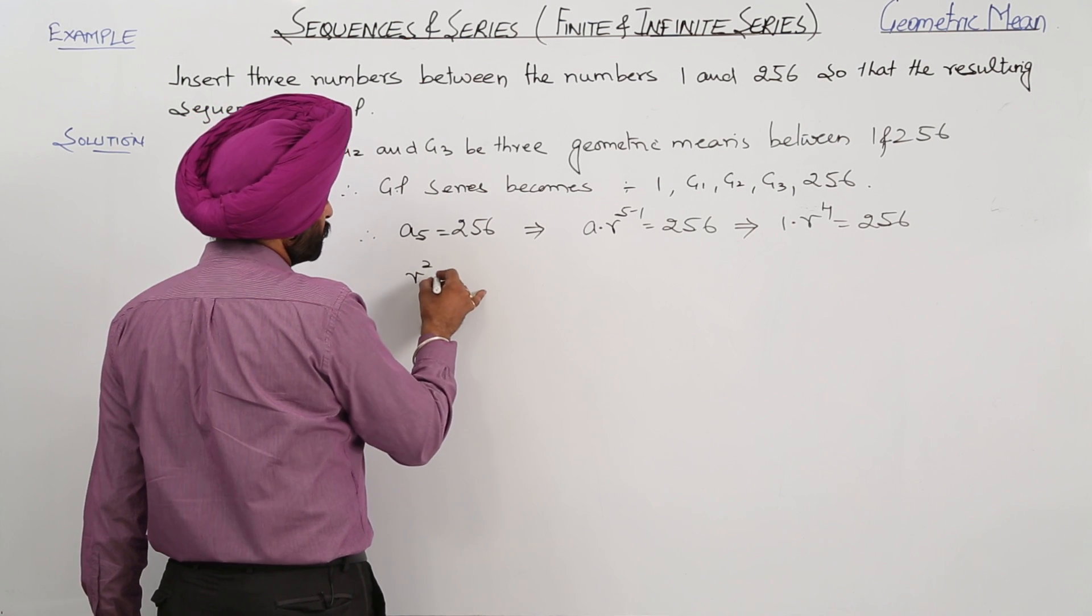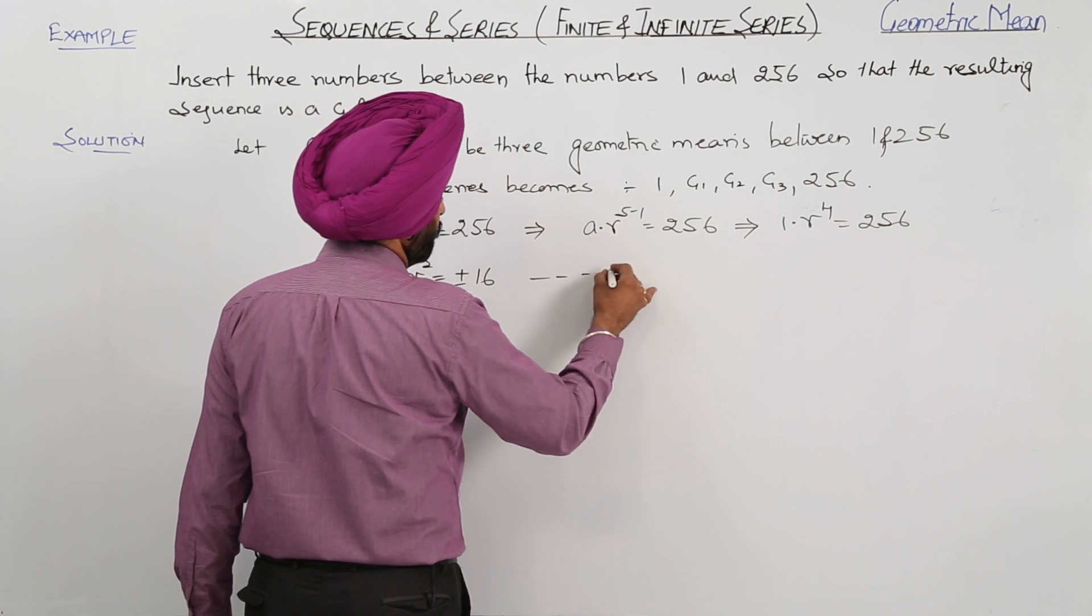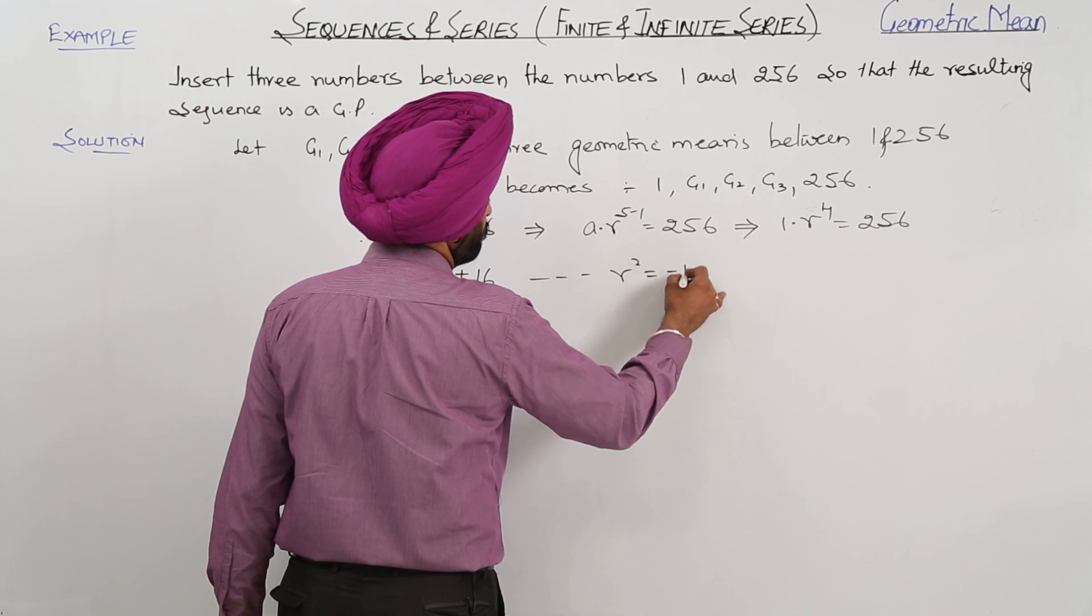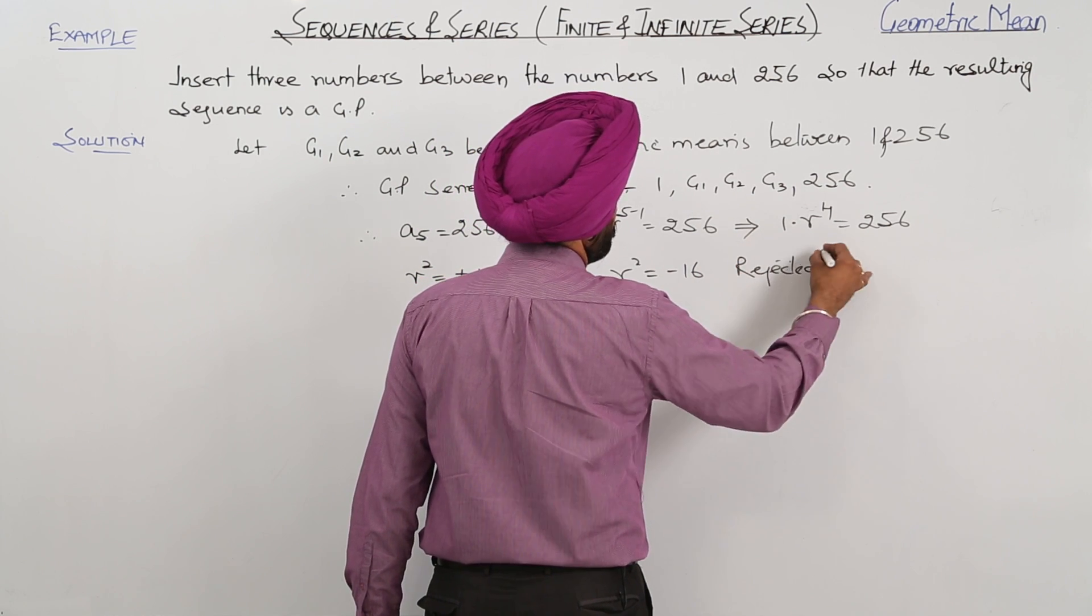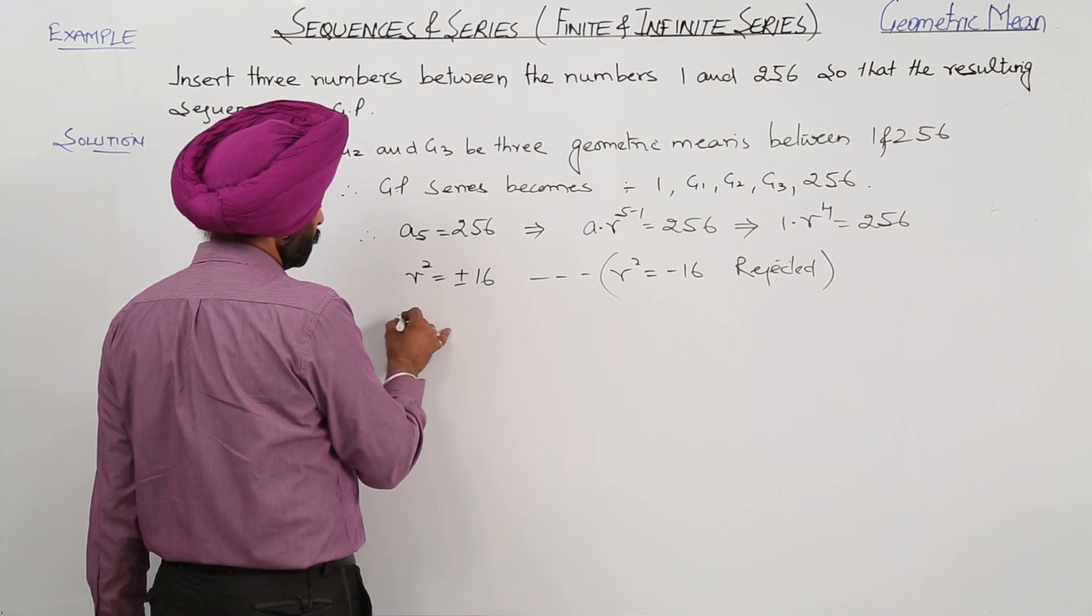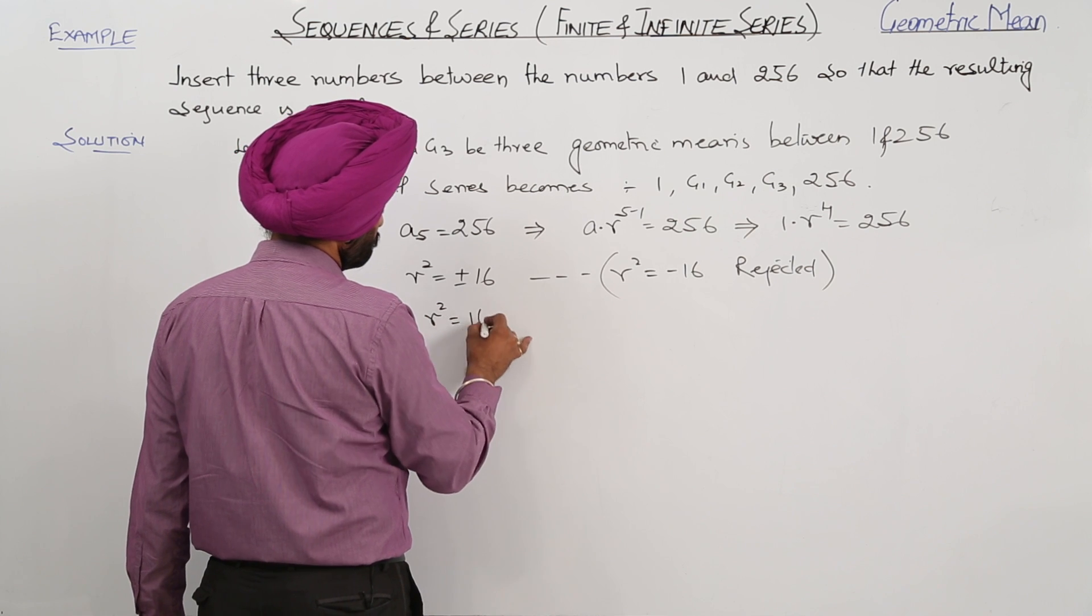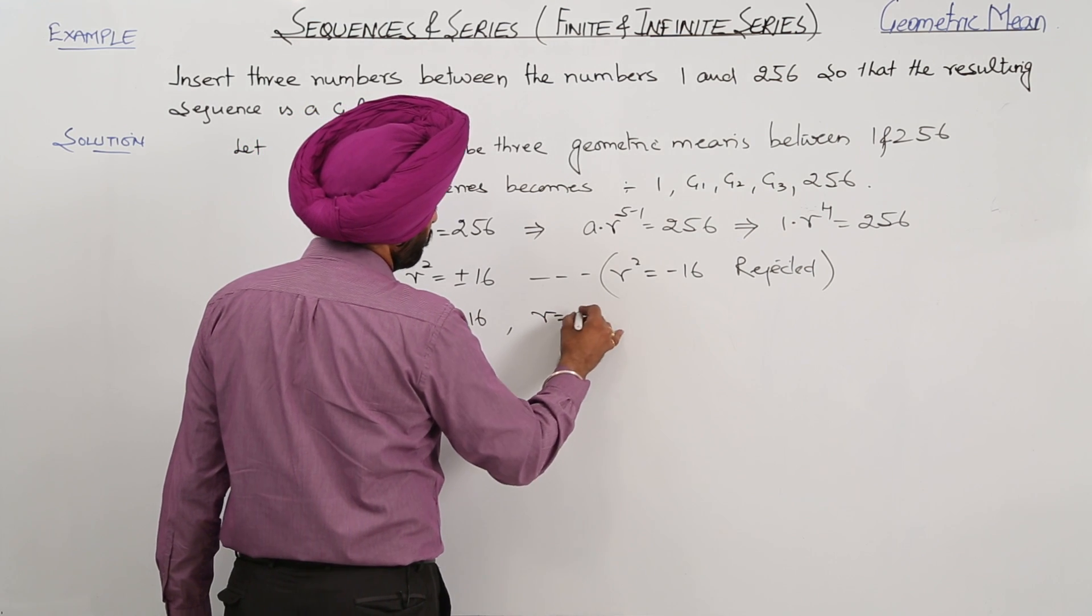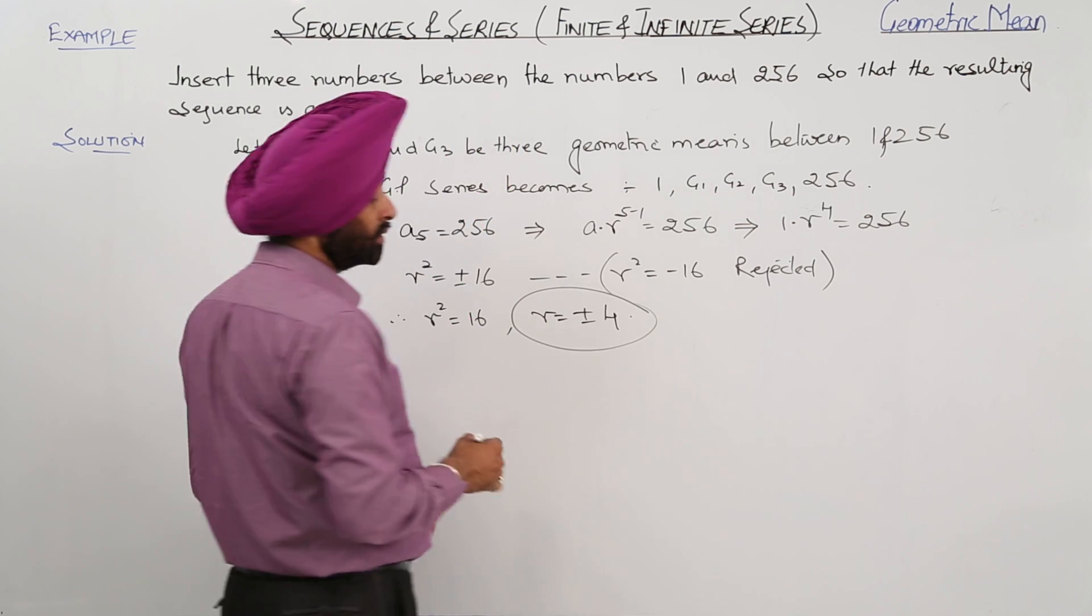Now what we can write: R square is equal to plus minus 16, and R square equal to negative 16 will be rejected. Therefore, R square is equal to 16 and R is equal to plus minus 4. So here we got the common ratio.